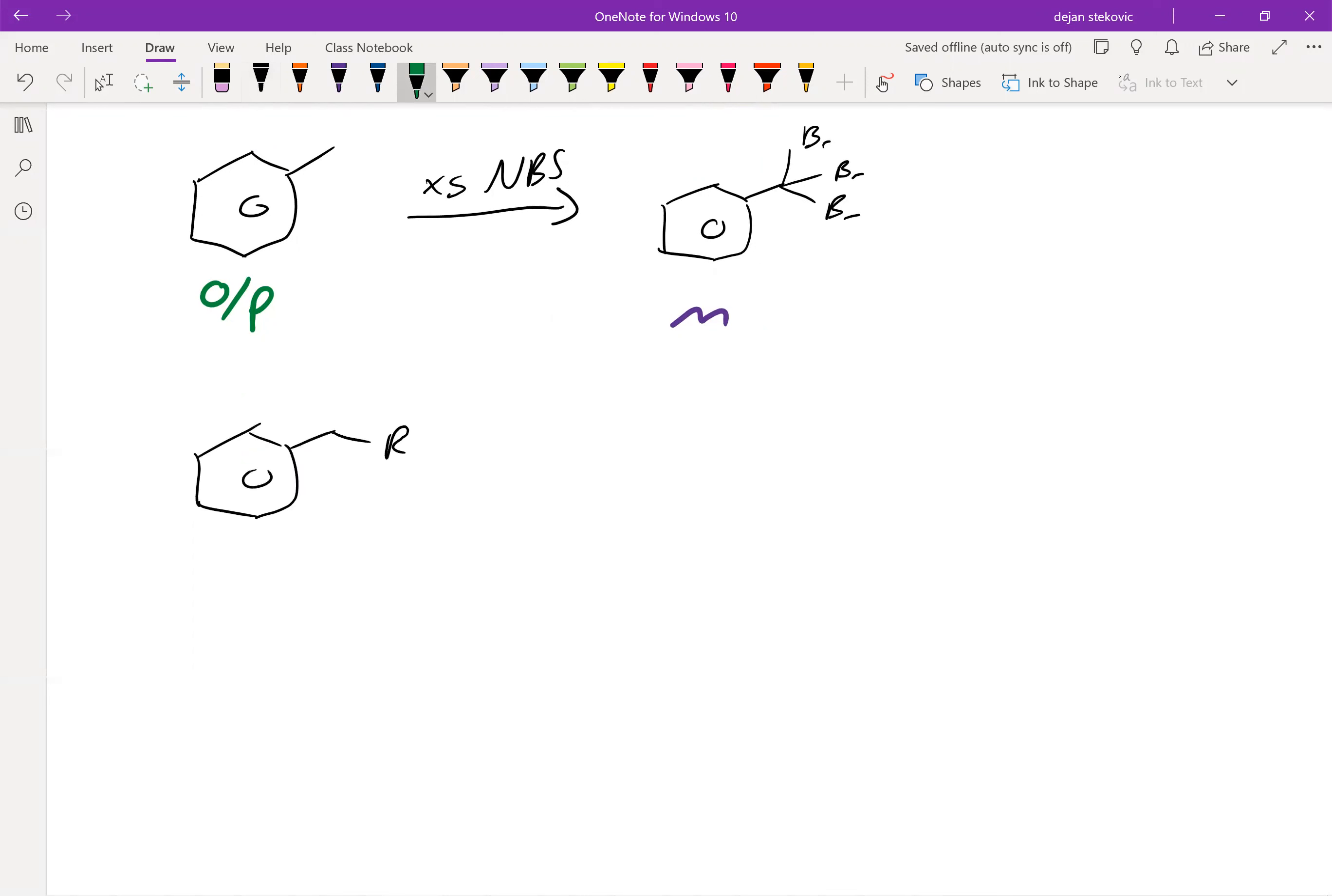We could take an alkyl group which is also an ortho para director, and we could add some KMnO4, oxidize it into a carboxylic acid group.